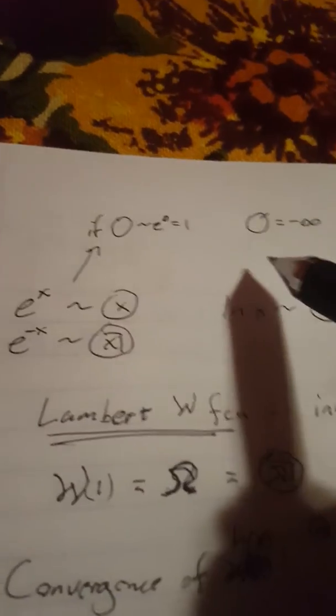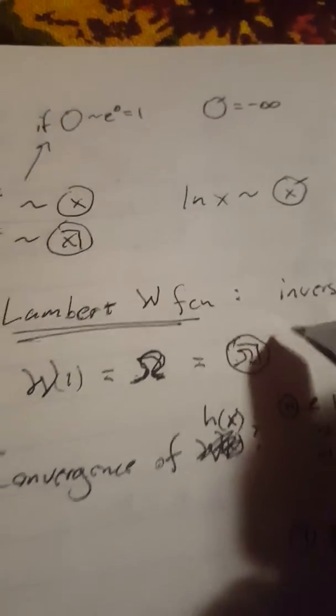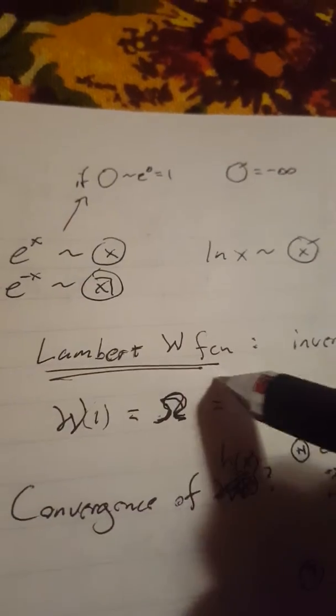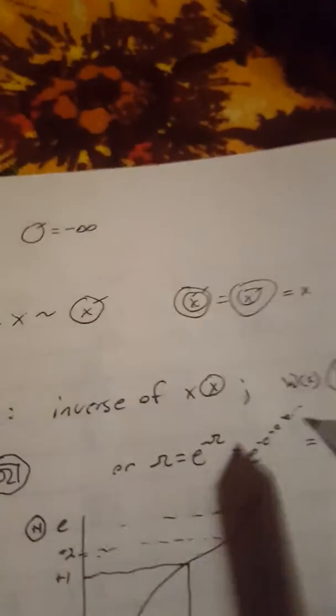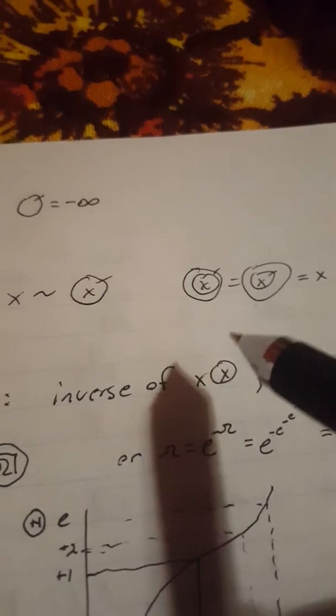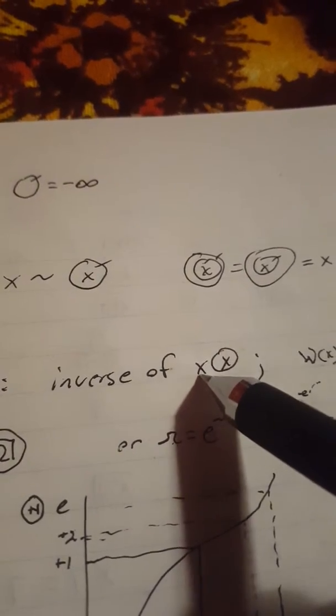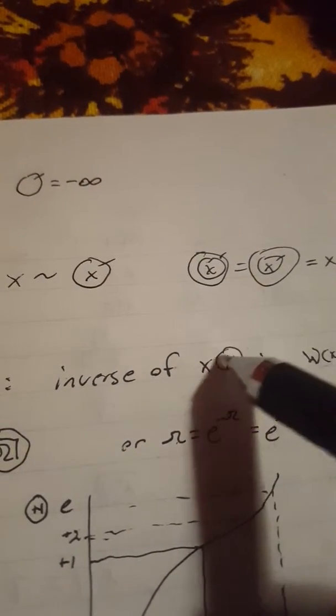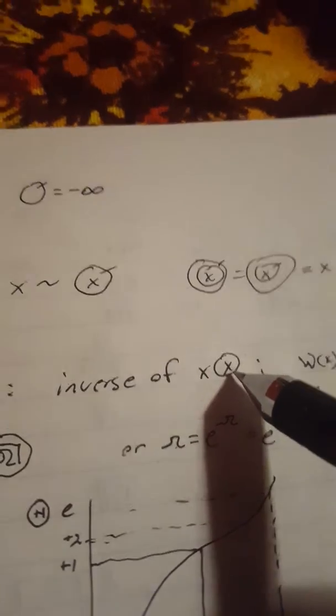But I think one way this could be useful beyond complex numbers, although it gets to that point, is through the Lambert W function. I'll say more of that at some point, but briefly, it's the inverse of the function x times e to the x.